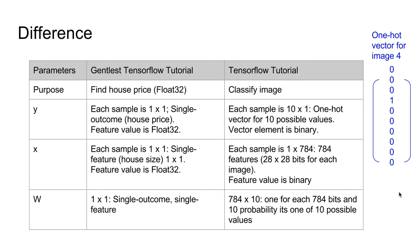X in our case is just the house size — a float value. The data in the actual TensorFlow tutorial is an image: each image is 28 by 28 pixels, which if flattened becomes 1 by 784. Each value can be 0 or 1 for a black-and-white image, or some other value for a color image. So the number of features in the actual TensorFlow tutorial is 784, which is much more. The W matrix really depends on the number of outcomes and number of features — in our tutorial there is only one outcome and one feature, whereas in the TensorFlow tutorial there are 784 features and 10 possible outcomes.